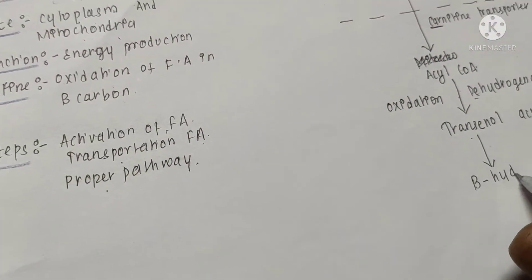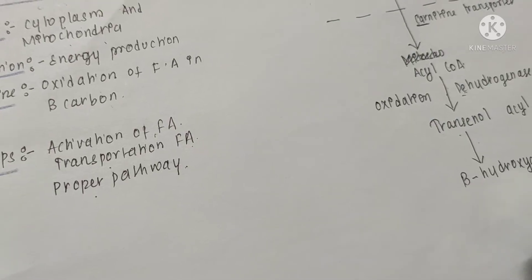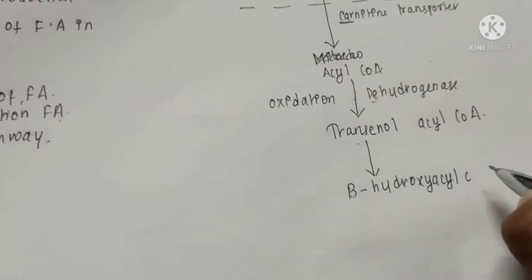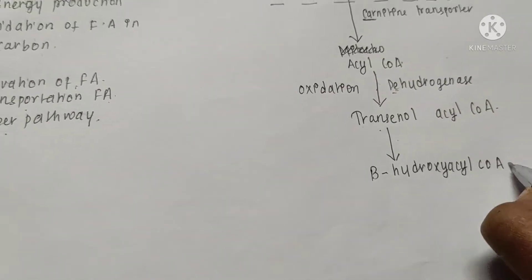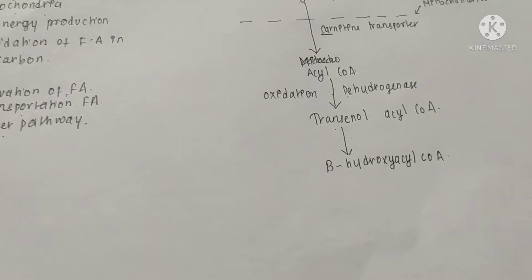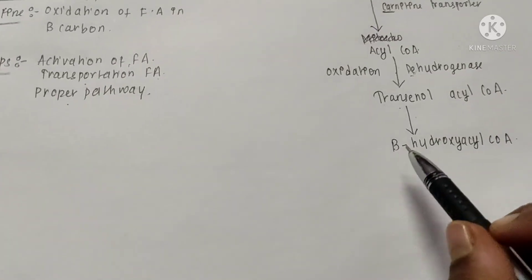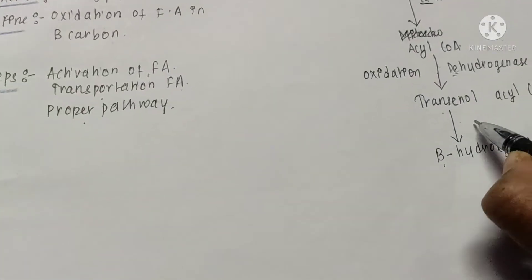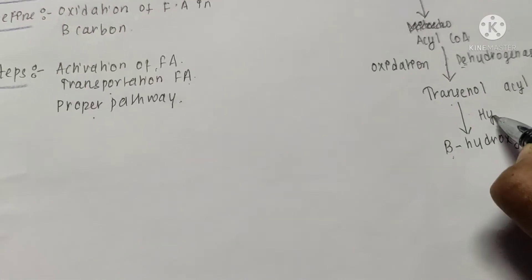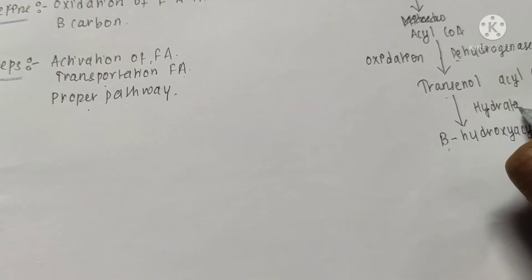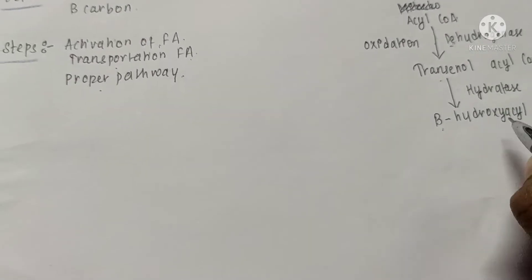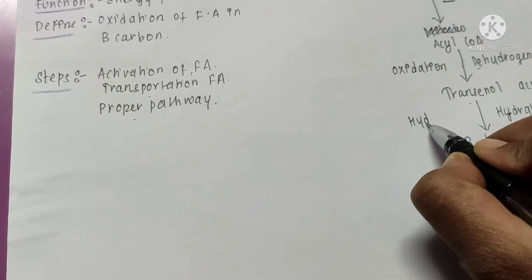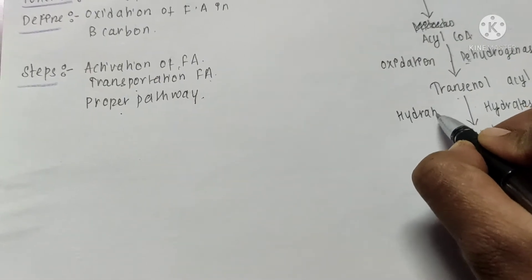Next is product B — hydroxy acyl CoA. The enzyme comes from H in our mnemonic, which is hydratase. This process is known as hydration, where hydratase acts on trans-enoyl acyl CoA to form hydroxy acyl CoA.